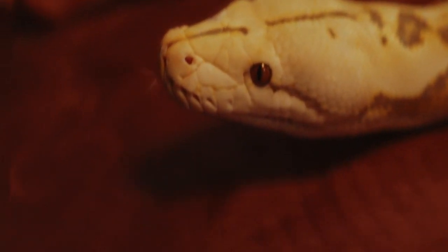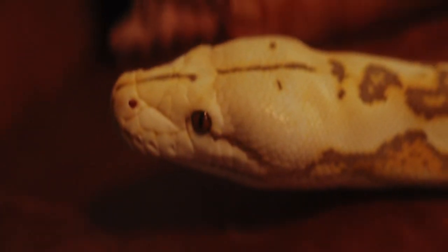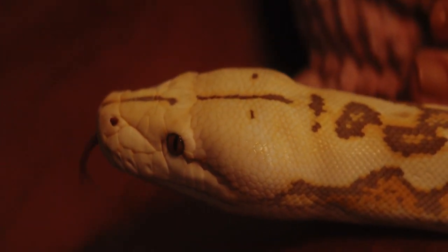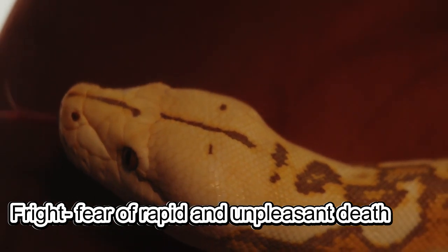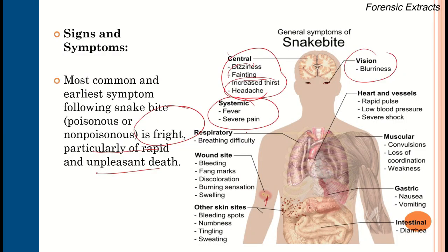The most common sign and symptom is fright — fear of early, rapid, and unpleasant death. Other general symptoms include dizziness, faintness, increased thirst, headache, blurry vision, fever, and severe pain at the local site. Respiratory difficulties are present. At the wound site: bleeding, fang marks, discoloration, burning sensation, swelling, and edema may be seen. Bleeding spots, numbness, tingling, and sweating may also occur.